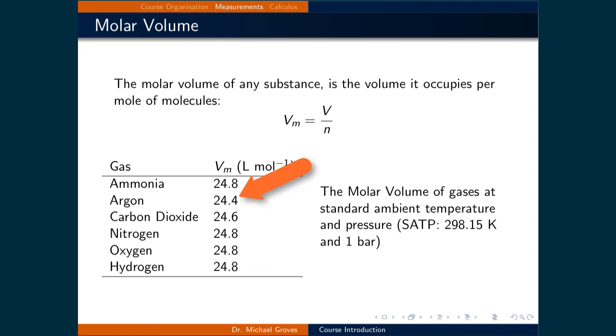For example, argon has a molar volume of 24.4, and carbon dioxide has a molar volume of 24.6. We will discuss these differences later. For now, it's okay to simply note what the molar volume is, and that many gases have similar molar volumes.